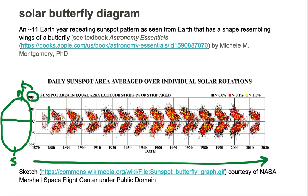At solar minimum, we see very few sunspots, and at solar maximum, we see many sunspots. The sunspots, over time, move towards the equatorial regions until the next solar minimum occurs, which is around 11 years from the previous solar minimum. This repeating shape every 11 years looks like the wings of a butterfly, hence the name solar butterfly diagram.